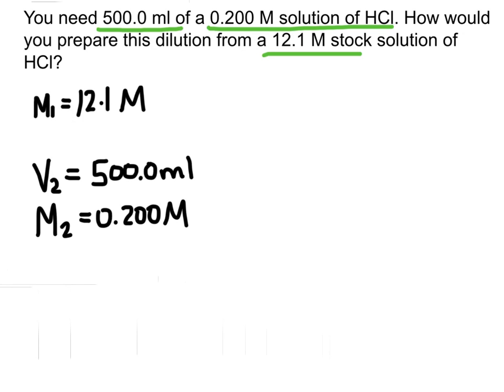The unknown here would be V1. We're basing this all on the equation right here—that's where all these variables are coming from. We know we're going to have to add water to our stock solution and end up with a total volume of 500 milliliters.